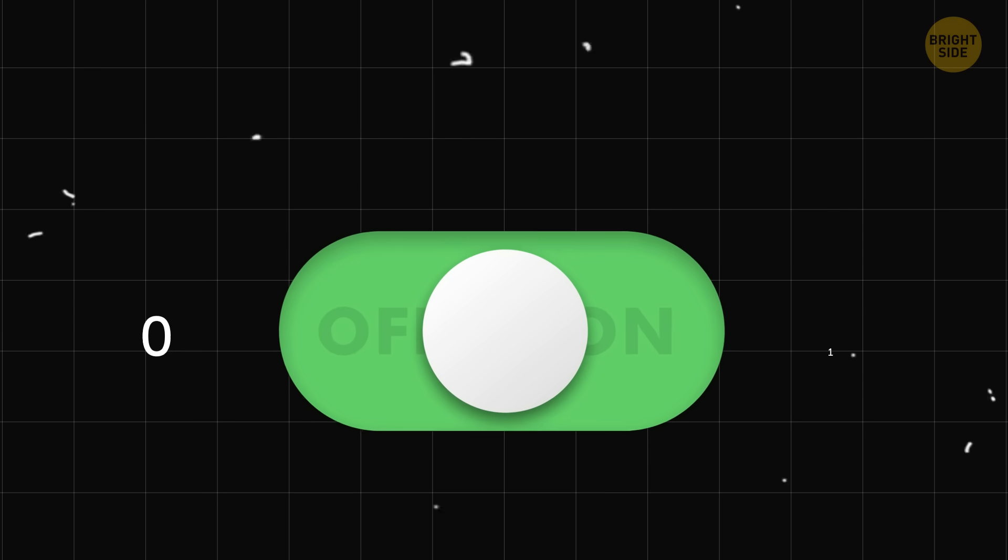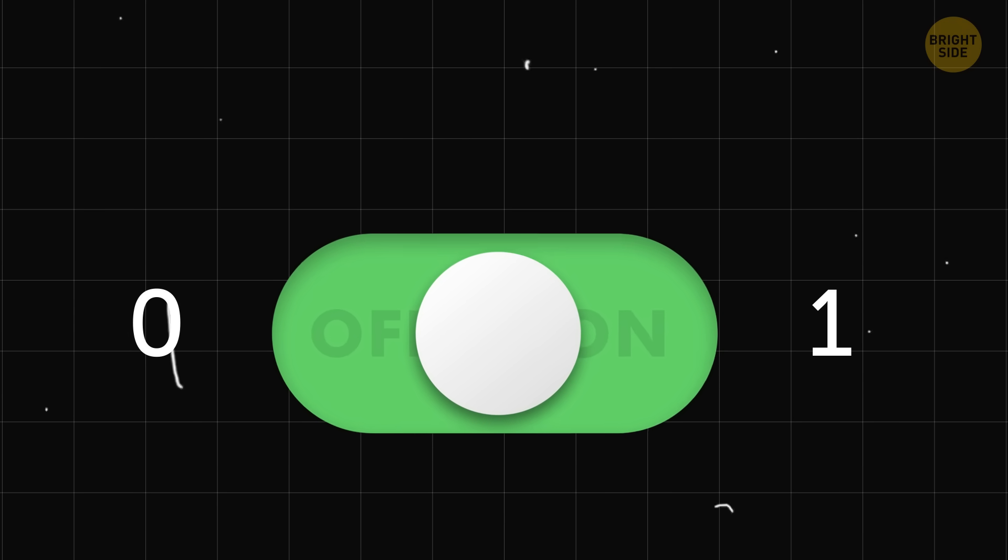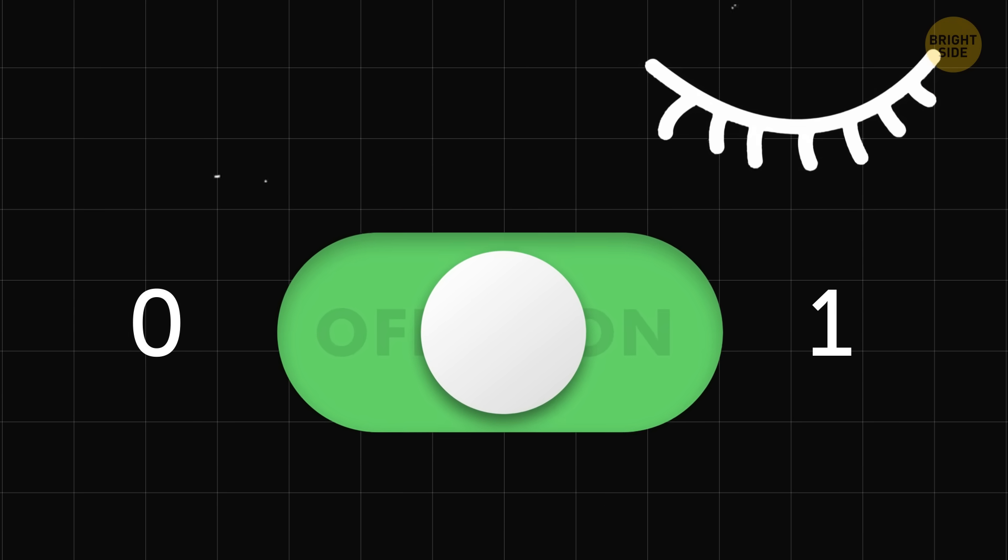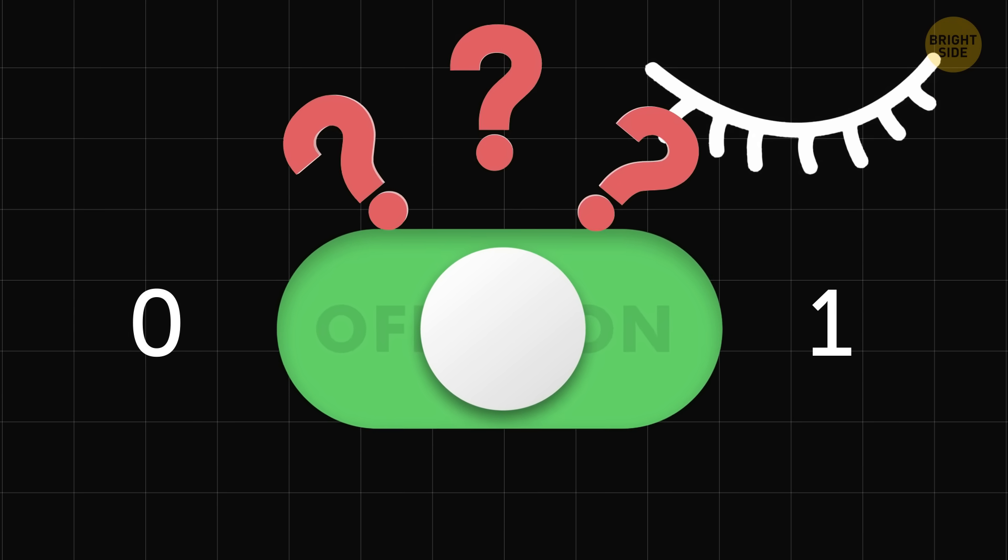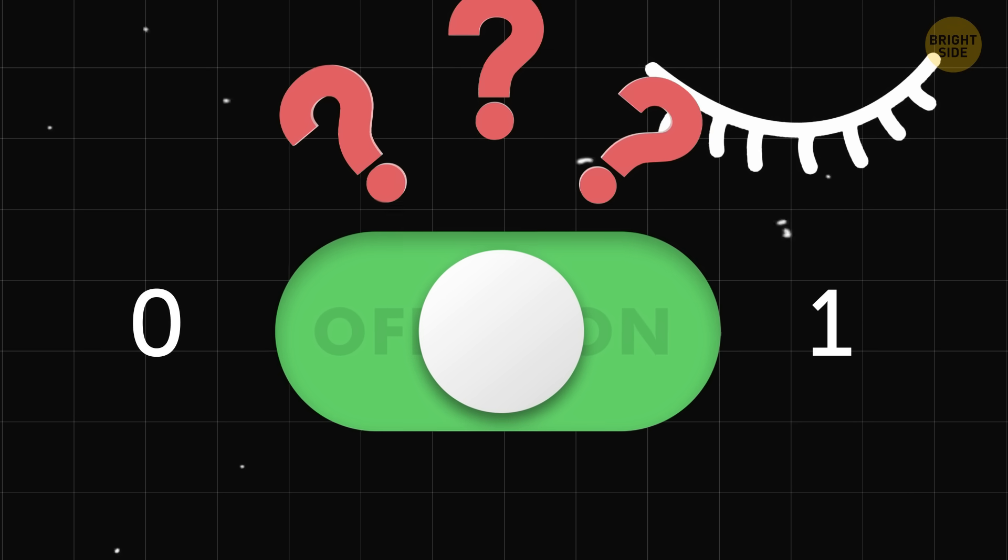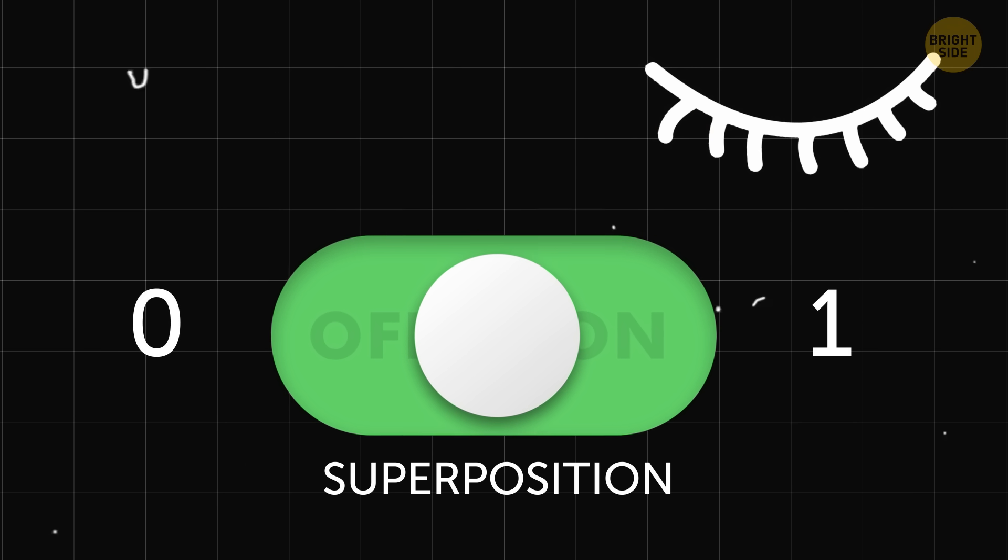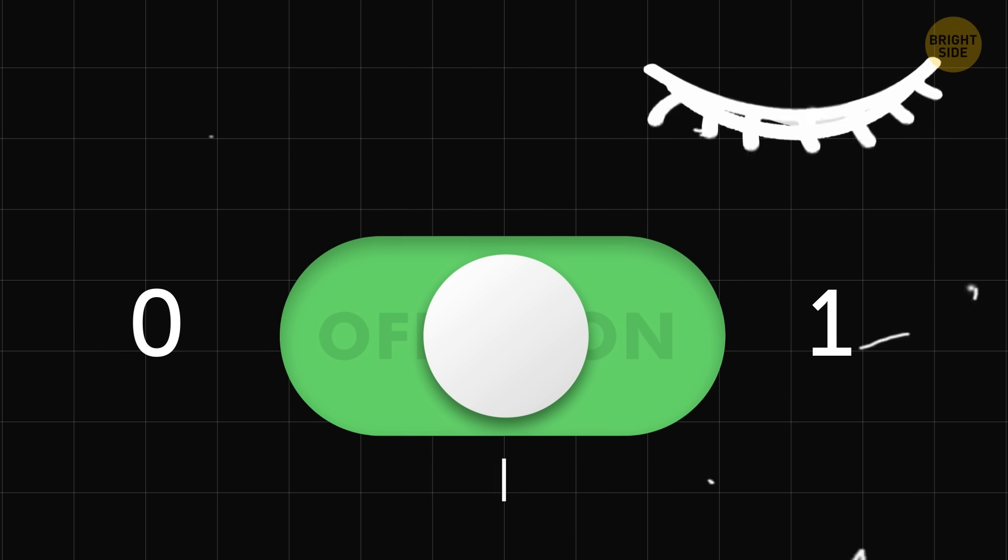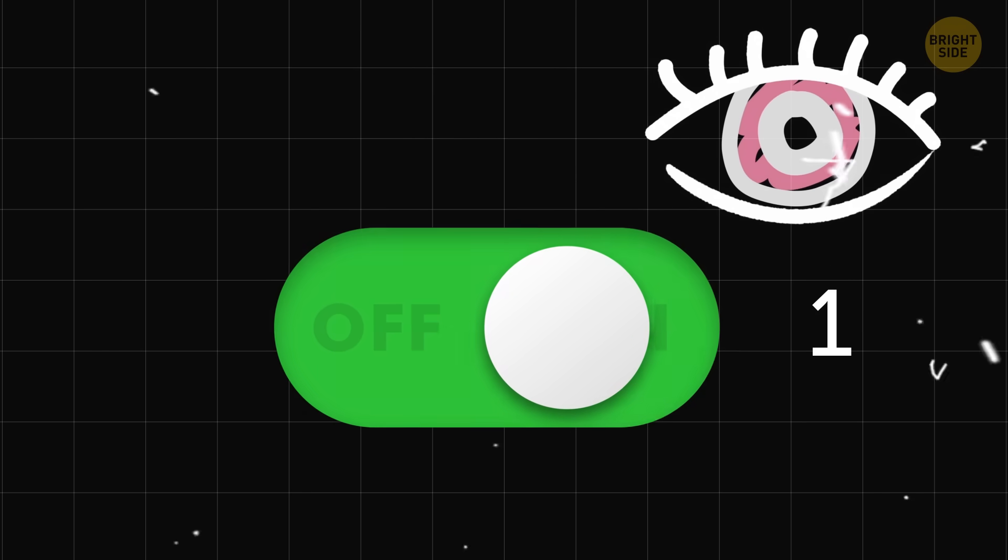Qubits represent both zero and one at the same time. That is, until you look at the switch, you don't know if it's on or not. This means that it's in a superposition. And only when you look at it does it take position one or zero.